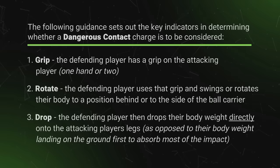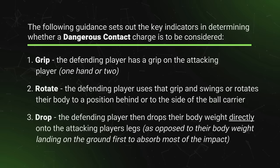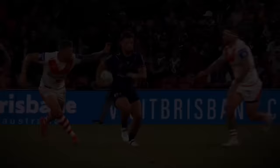There are three common elements to all hip drop tackles. One, the defender grabs hold of the ball carrier with one or both hands. Two, they then swing or rotate their body to a position to the side of or behind the ball carrier. Three, they then drop the bulk of their body weight directly onto the legs of the ball carrier.